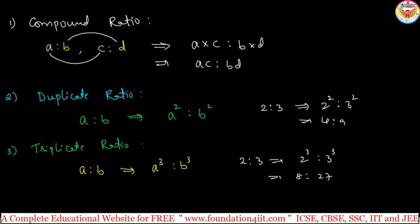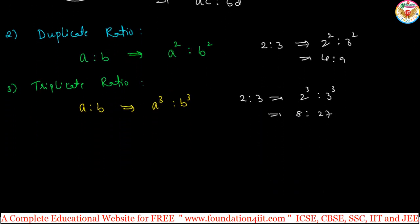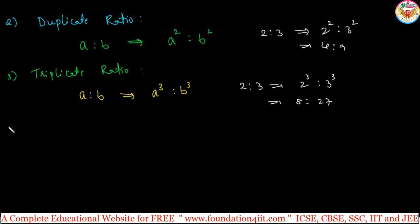And next, based on this duplicate and triplicate, we have sub, one more word, subduplicate. Subduplicate ratio. Here, instead of squaring, we will go for square root, that is the difference. For any ratio of A is to B, then this subduplicate ratio is square root of A is to square root of B.